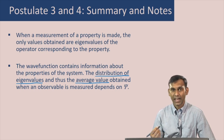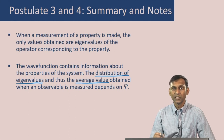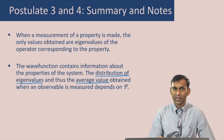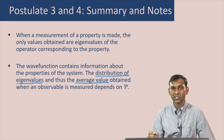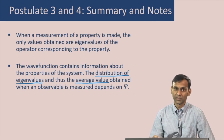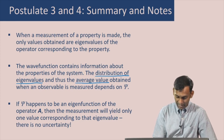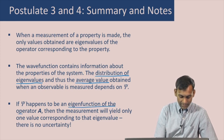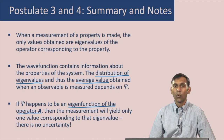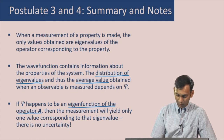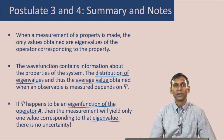If you measure, say, the energy of a quantum particle, postulate 4 tells you what the average value of that energy is. The energy itself might have different values and a distribution. If psi happens to be an eigenfunction of the operator A, then the measurement will yield only one value corresponding to the eigenvalue — in that case there is no uncertainty.